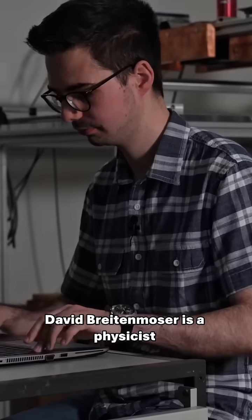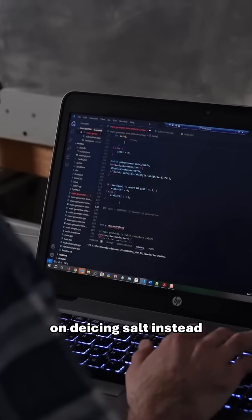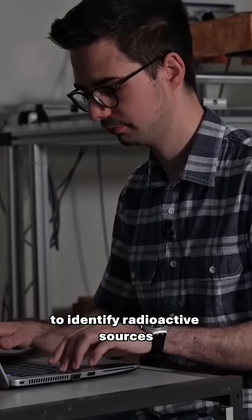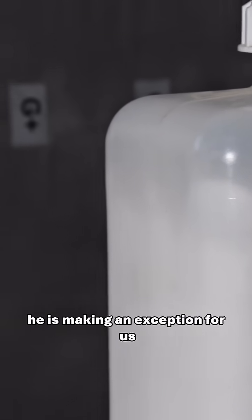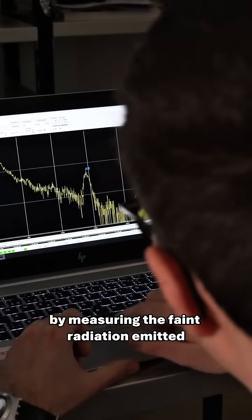David Breitenmoser is a physicist. He doesn't normally perform measurements on de-icing salt. Instead, he develops complex computer code to identify radioactive sources. He is making an exception for us to demonstrate the capabilities of this detector by measuring the faint radiation emitted.